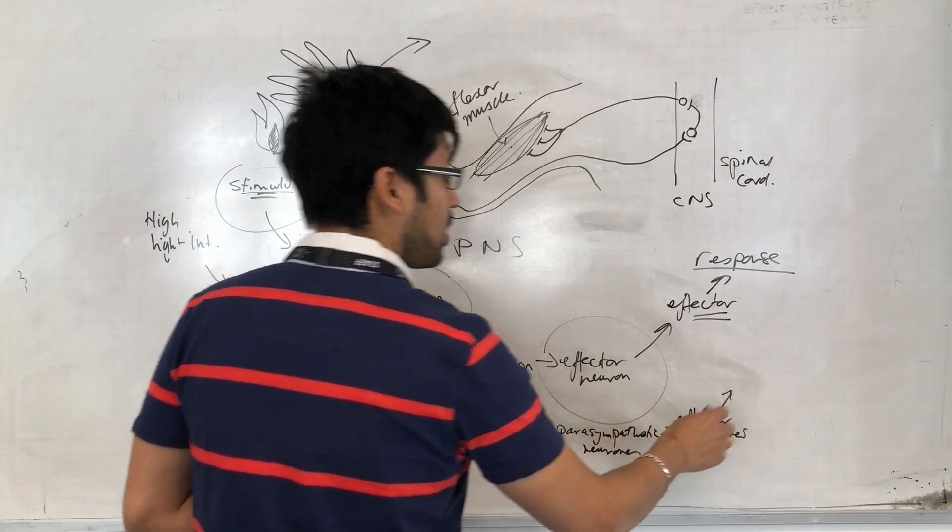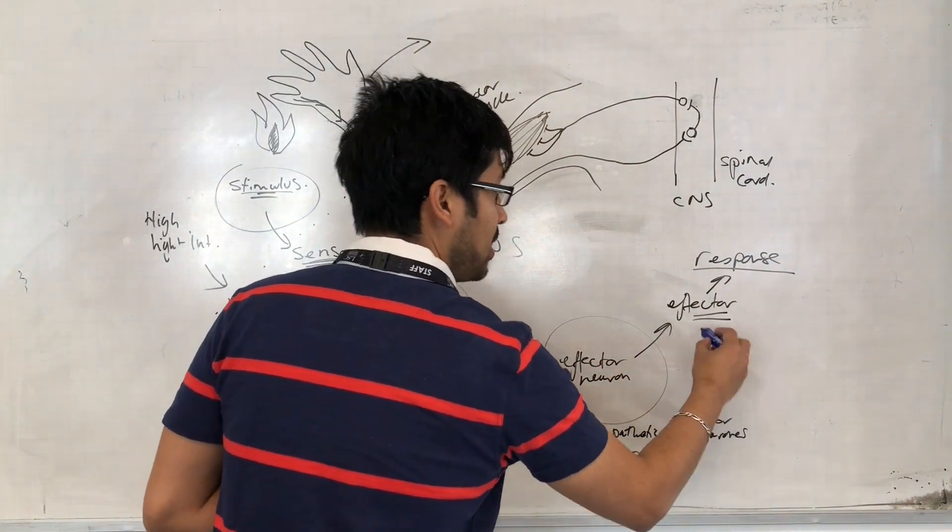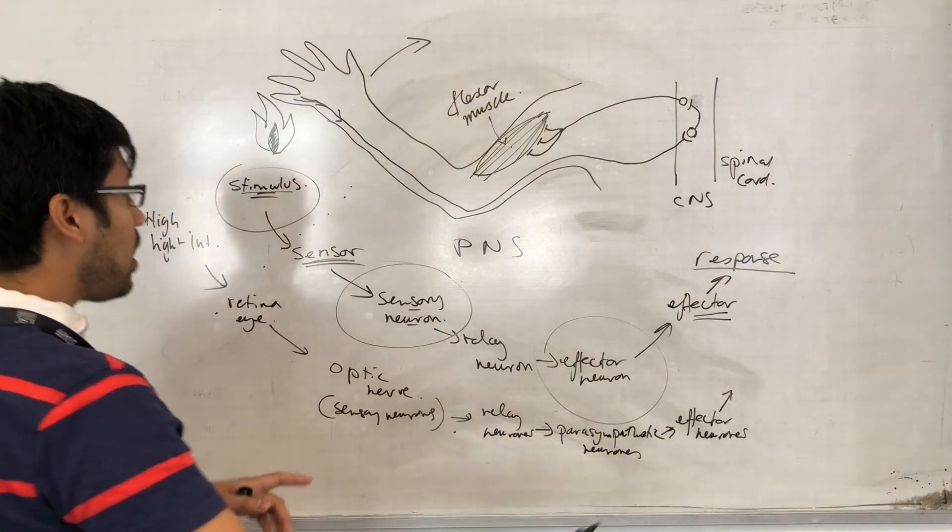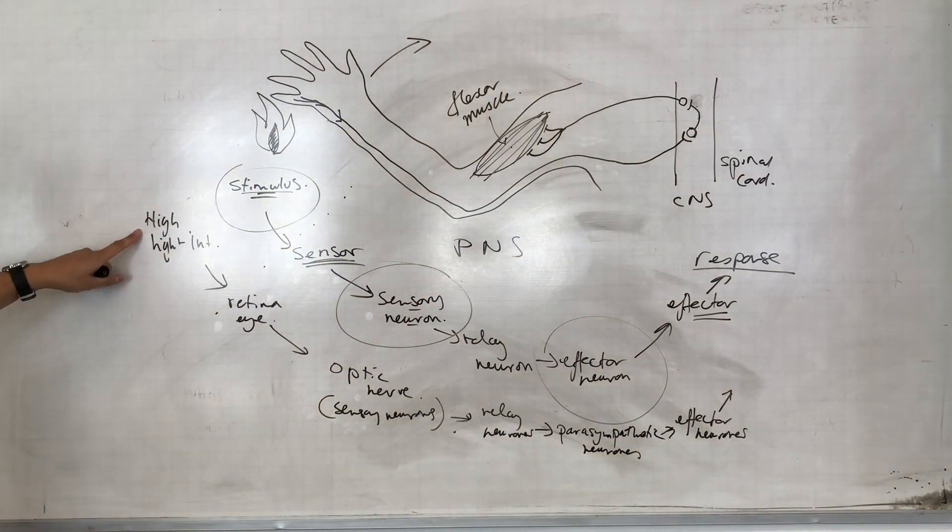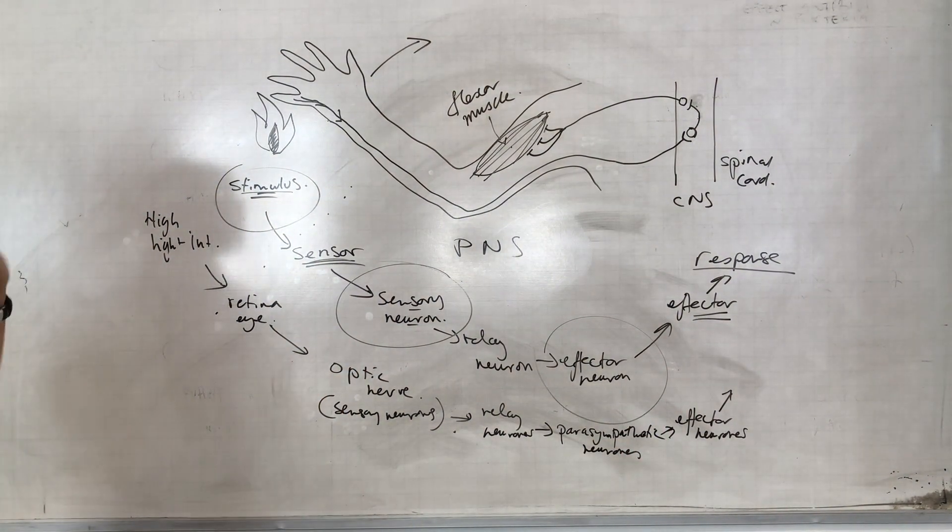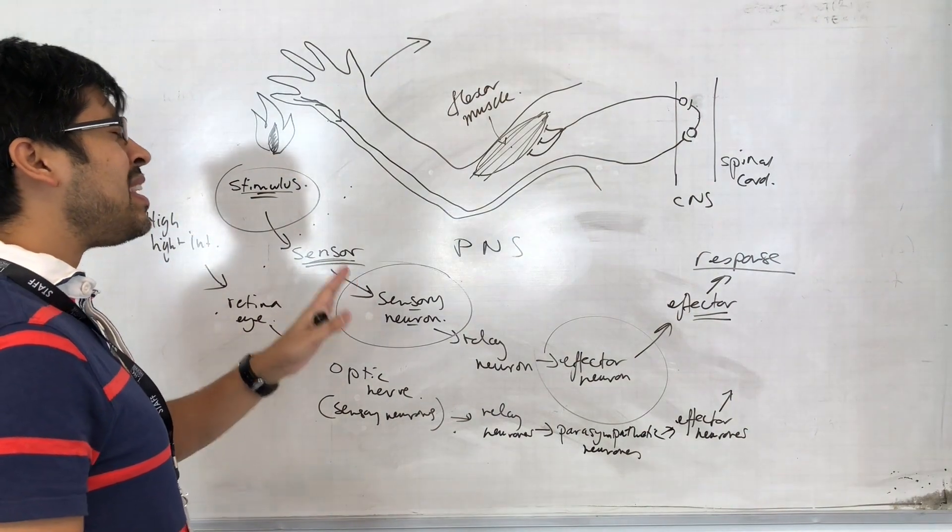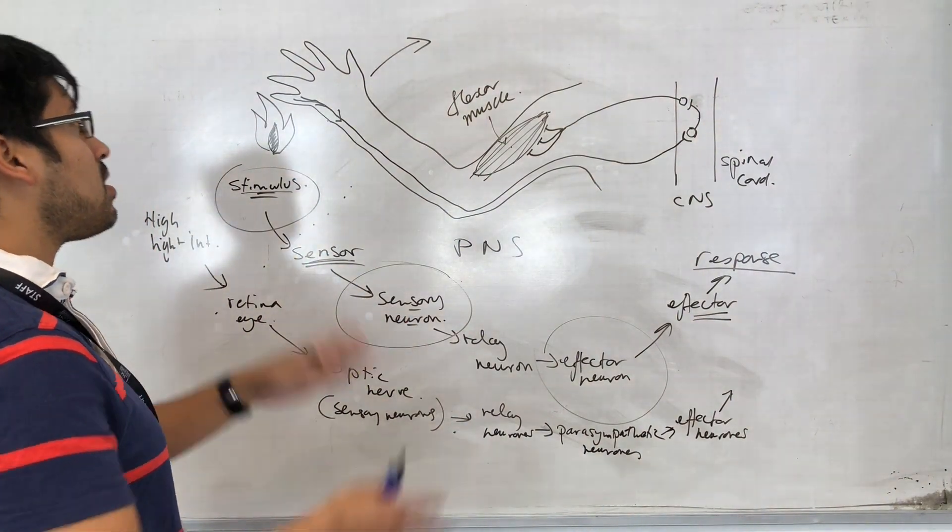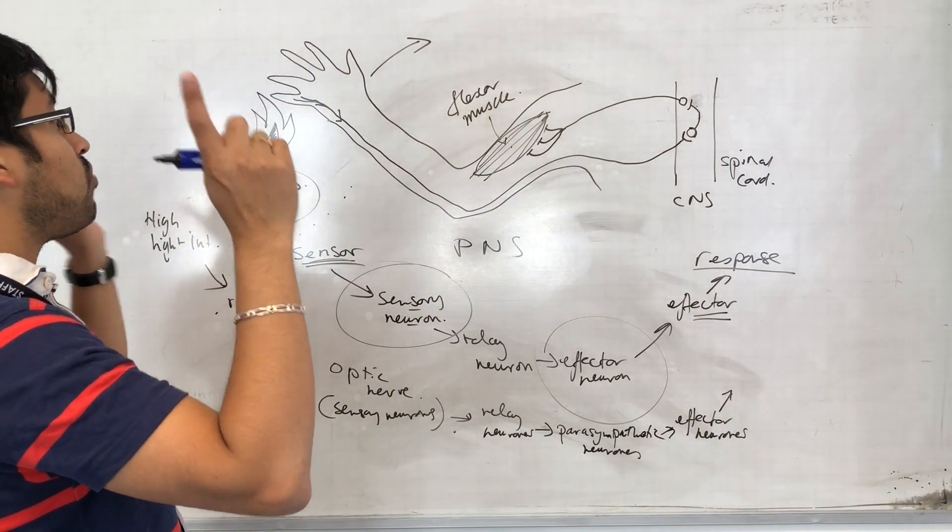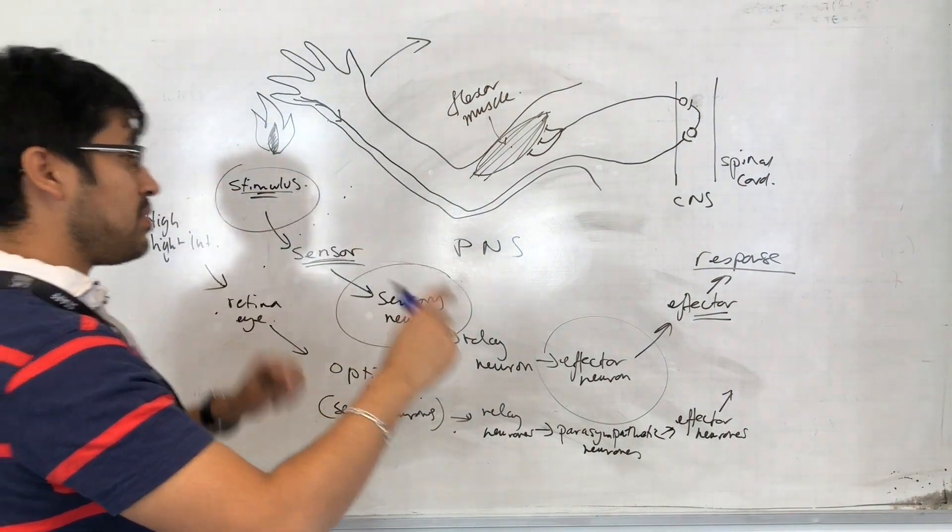And the effector neurons are hooked up. In this case, the effector in the eye that's going to make the appropriate response to too much light is going to be the radial—no, circular muscles.